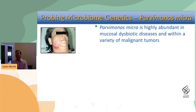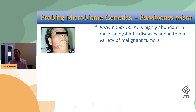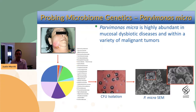The bug we'll talk about today — the most recent organism we've created a genetic system for — is called Parvomonas micra. This is a classic pathobiont. It's very highly abundant in mucosal dysbiotic diseases, and in fact it's also one of the most common organisms you'll find inside malignant tumors. For all of our infection biology studies, we go directly to patient samples and use classic microbiology to target the organisms we're after.